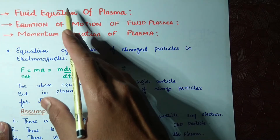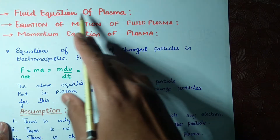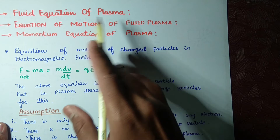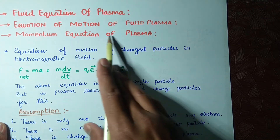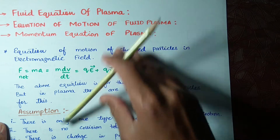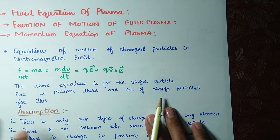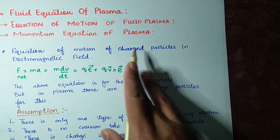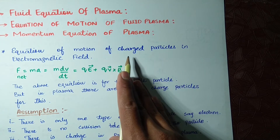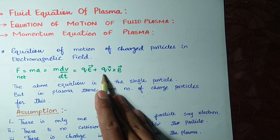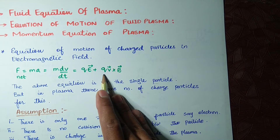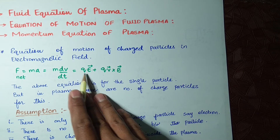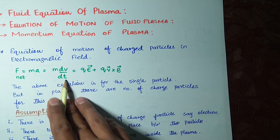If you have studied in the Naftian fluid equation of plasma, it is named as the equation of motion of fluid plasma. A teacher can ask you to write the momentum equation of plasma or write the fluid equation of plasma — you have to write this thing I am going to show you now. The equation of motion of a charged particle starts with the Lorentz force equation: F = q(E + v × B), where F = ma = m(dv/dt).